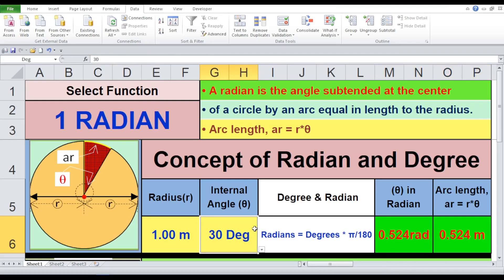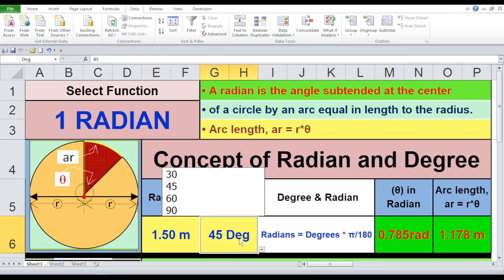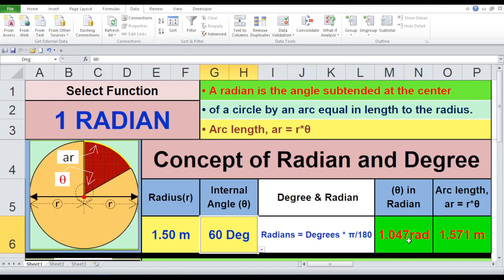Trial 2. Radius 1 meter, angle 45 degrees, theta equals 0.785 radians, arc length equals 0.785 meters. Trial 3. Radius 1.5 meters, angle 60 degrees, theta equals 1.047 radians, arc length equals 1.571 meters.